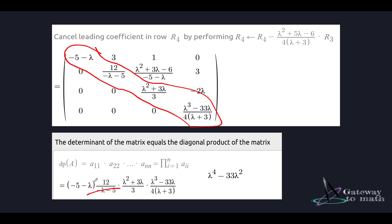Simplifying: cancel (minus 5 minus lambda) with the denominator, 3 cancels to 1, 4 cancels with 4. Factor lambda outside, (lambda plus 3) cancels, leaving lambda multiplied by lambda cubed, which gives lambda to the 4th minus 33 lambda squared. So the characteristic polynomial of the matrix is lambda to the 4th minus 33 lambda squared, and that is how you solve for the characteristic polynomial of a matrix.